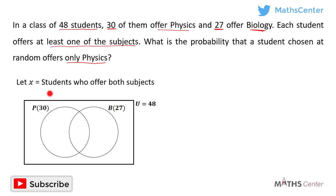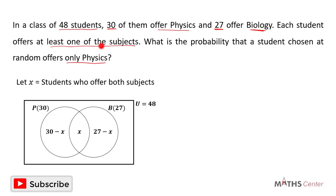Let's assume that the number of students who offer both subjects is x, so the intersection region is x. That means the number of students who offer physics only is 30 minus x, and the number who offer biology only is 27 minus x. Since each student offers at least one subject, the complement of P union B is 0.